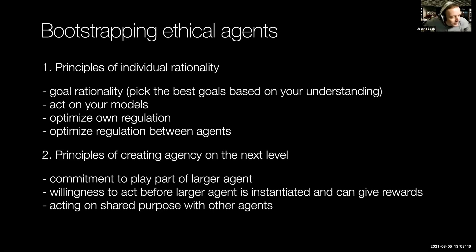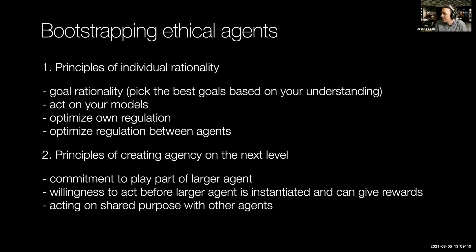These principles of creating agency on the next level — first of all, you need to have a commitment to play a part in a larger agent. This means you have to accept that this larger agent should exist in the world, projected as a coherent pattern, and that you are willing to implement it via your actions and take its perspective. You need to be willing to act on that larger agent before it can give you rewards. Once it exists, it is useful to act based on it because you reap larger rewards as part of an organism than as a single-celled organism. But before the larger organism exists, you just have to pay out expenses without getting a reward. So you need to be willing to give the thing some credit — to act before it exists, even if it cannot give you rewards in your lifetime, but might only give rewards to your descendants.